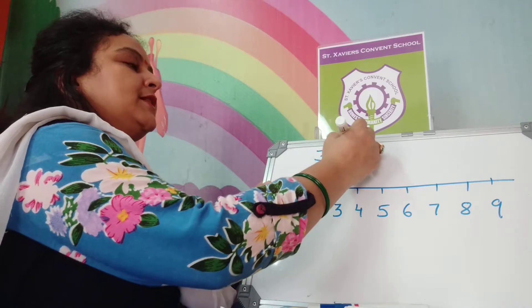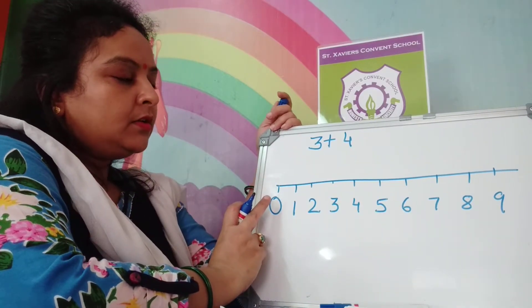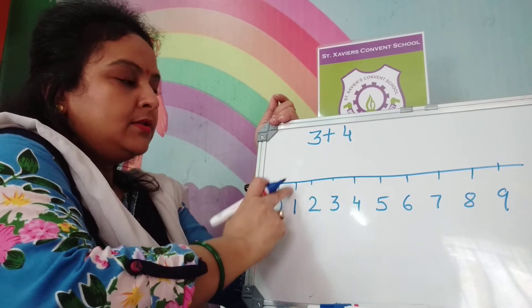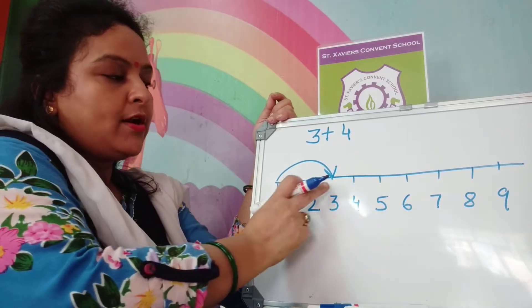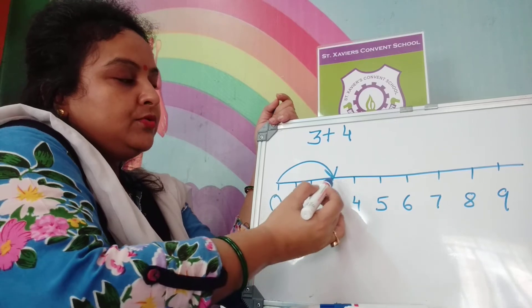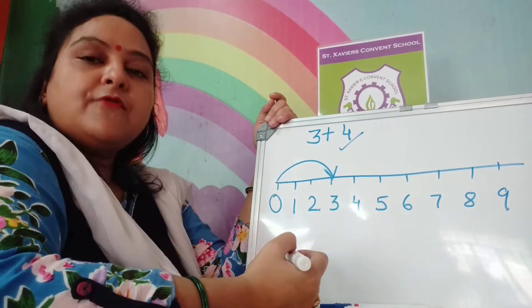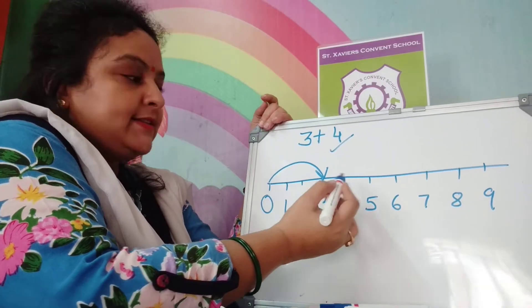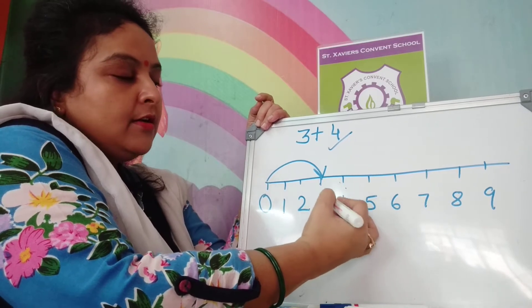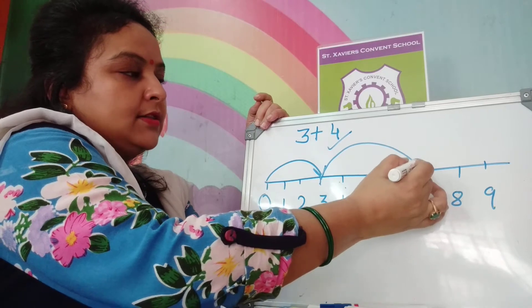Suppose you have to add 3 plus 4. How will you show this addition on the number line? You will start from 0 and move 3 steps: 1, 2, 3 — you will show the arrow on number 3. Then from number 3, you have to go 4 more steps: 1, 2, 3, 4. This comes to number 7.